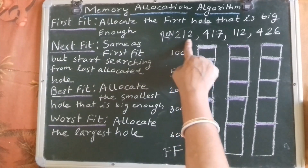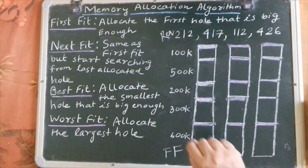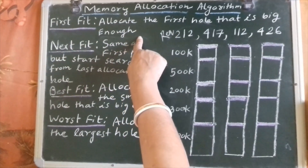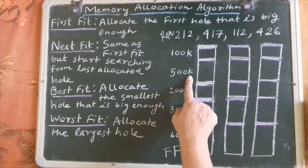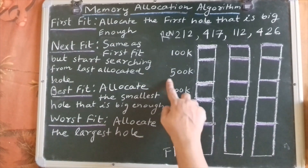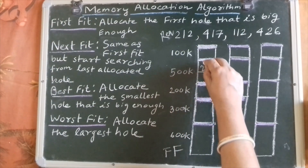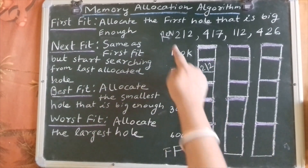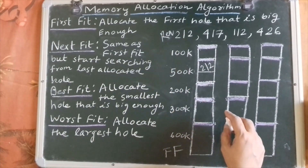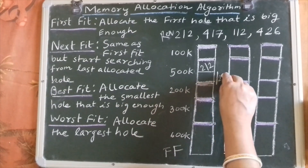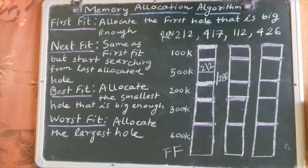The first request is for a 212k process. According to first fit, we have to allocate the first hole that is big enough. The first hole big enough is 500k, since 100k cannot accommodate 212k. So we place the 212k process in 500k, and the leftover space is 500k minus 212k, which is 288k.